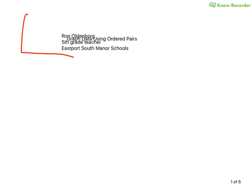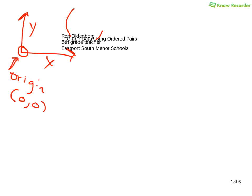Today we're going to talk about graphing data using ordered pairs. Yesterday we talked about a coordinate grid. This little spot right here is called the origin — it is (0, 0), that is the ordered pair for it. This is where everything starts. We have numbers written on the x-axis and numbers written on the y-axis, and when we look at our ordered pairs, they go in x, y format. X always comes before y in the alphabet, so it should be coming before y in ordered pairs.